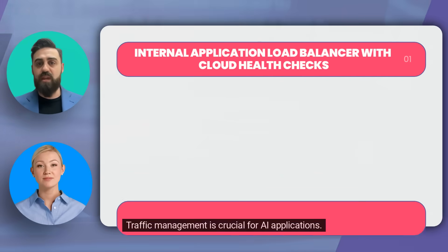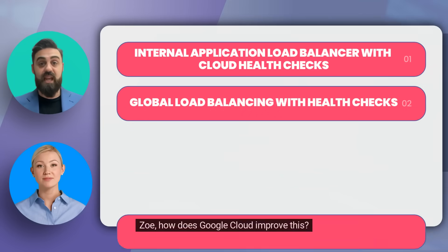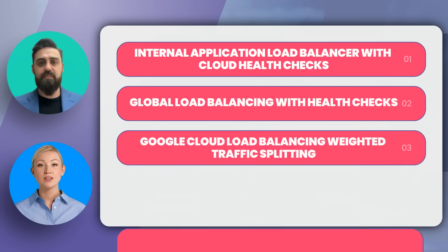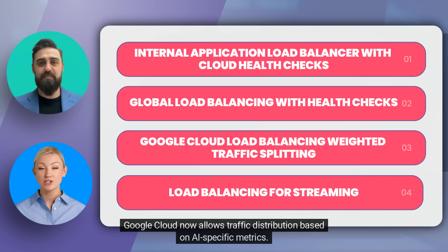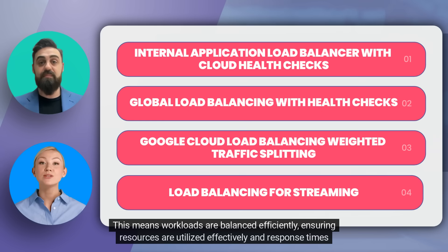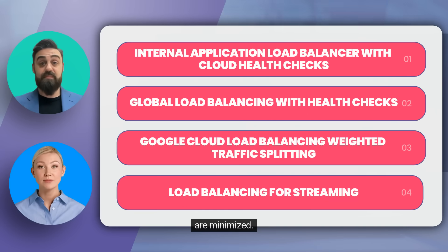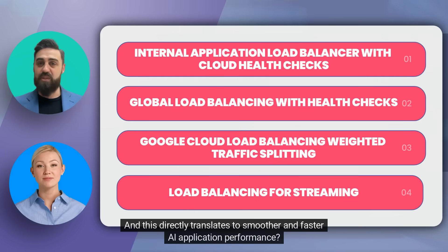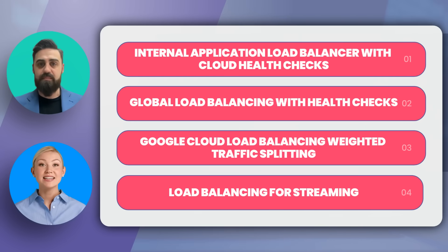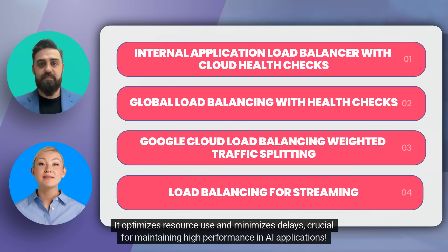Traffic management is crucial for AI applications. Google Cloud now allows traffic distribution based on AI-specific metrics. This means workloads are balanced efficiently, ensuring resources are utilized effectively and response times are minimized. This directly translates to smoother and faster AI application performance — optimizing resource use and minimizing delays, crucial for maintaining high performance in AI applications.